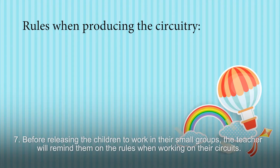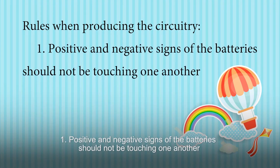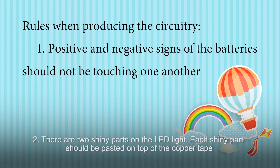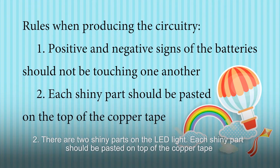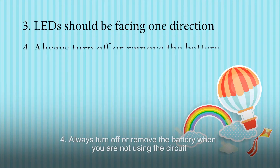Before releasing the children to work in their small groups, the teacher will remind them on the rules when working on their circuits: 1. positive and negative signs of the batteries should not be touching one another; 2. there are two shiny parts on the LED lights — each shiny part should be pasted on top of the copper tape; 3. LED lights should face the same direction when pasted on top of the copper tape.